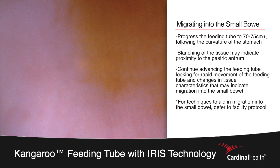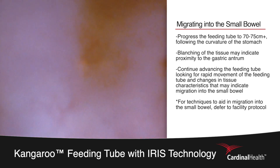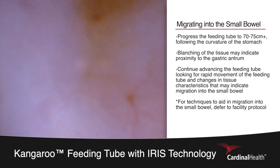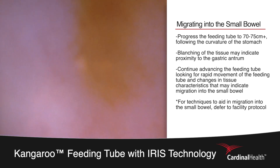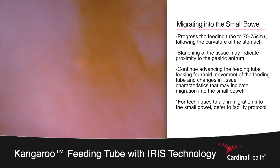As the placer continues to progress the tube to the 70-75 centimeter mark, you may visualize blanching of the tissue as the tube approaches the gastric antrum. At this point the placer has progressed the tube to the 70-75 centimeter mark down at the base of the patient's stomach.